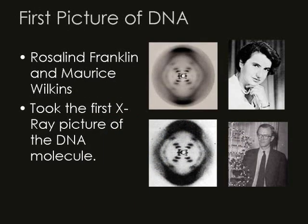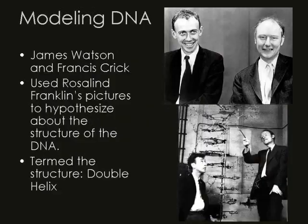Although DNA was found to be the carrier of genetic material through the experiments in the previous lecture, scientists still did not know what the structure of it was. The first picture of DNA was taken by Rosalind Franklin and Maurice Wilkins, who used x-ray crystallography to help determine the shape of the DNA molecule. Watson and Crick, using data that they stole from Rosalind Franklin, developed a model for what is now DNA — they described it as a double helix.